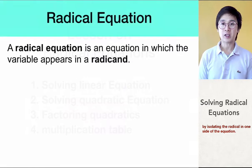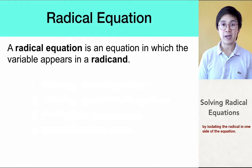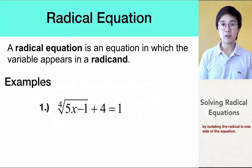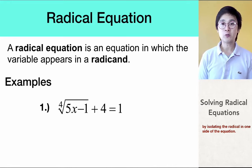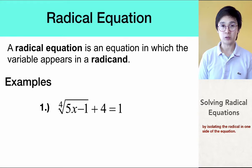Now, radical equations are basically equations with radical symbols. And radicals are symbols like square roots, cube roots, fourth root, third root, and so on. Now, you also need to remember that to undo the square root in an equation, all you have to do is take the power with the same root.